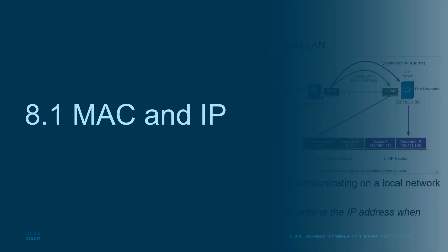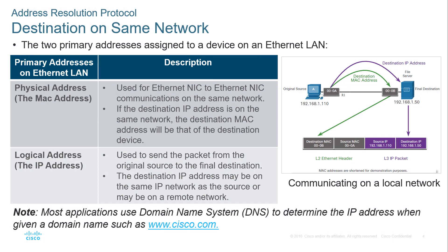First, MAC and IP addresses. Note that the MAC addresses shown are shortened — instead of six pairs, we're only showing two pairs. A MAC address is a 48-bit number, also known as a physical address, and it's used for local connectivity — local being part of the LAN. MAC addresses operate at Layer 2. Anything leaving the network uses a Layer 3 address, known as a logical address, also referred to as an IP address.